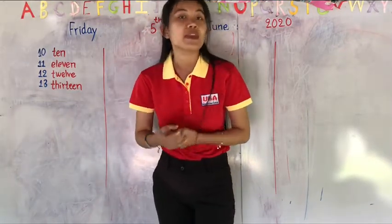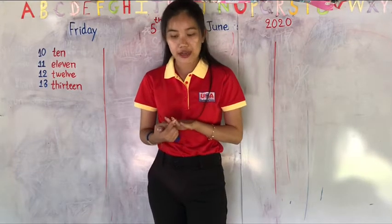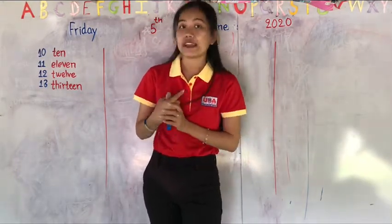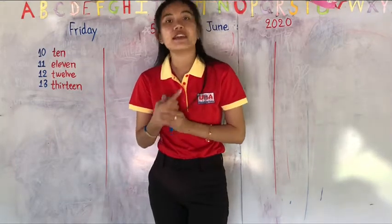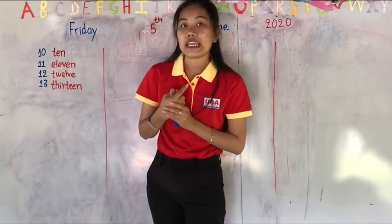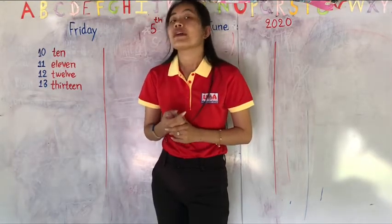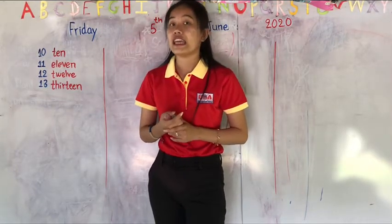Six, S-I-X. Seven, S-E-V-E-N. Eight, E-I-G-H-T. Nine, N-I-N-E. Ten, T-E-N. Eleven, E-L-E-V-E-N. Twelve, T-W-E-L-V-E. So thirteen, T-H-I-R-T-E-E-N.